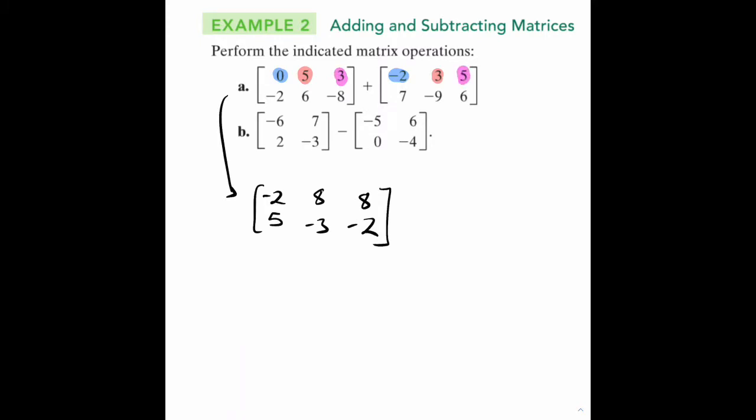For B, it's the same thing, except we subtract. Match each element with its corresponding element. Negative 6 minus negative 5 is negative 1. 7 minus 6 is 1. 2 minus 0 is 2. Negative 3 minus negative 4 is 1.